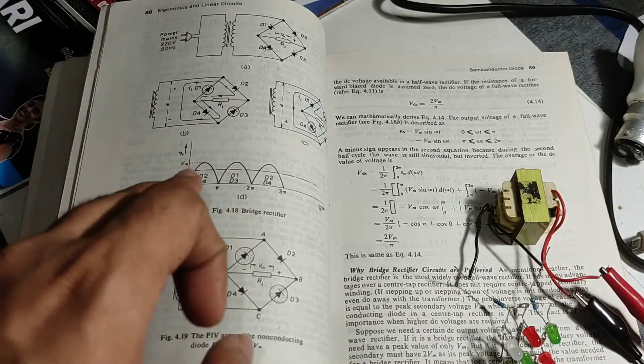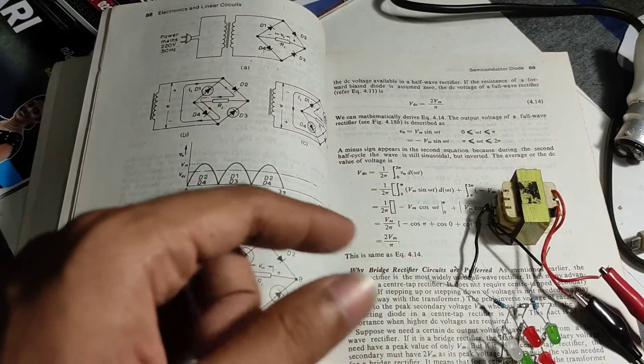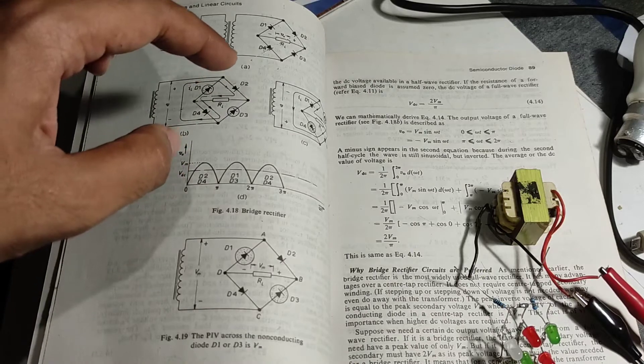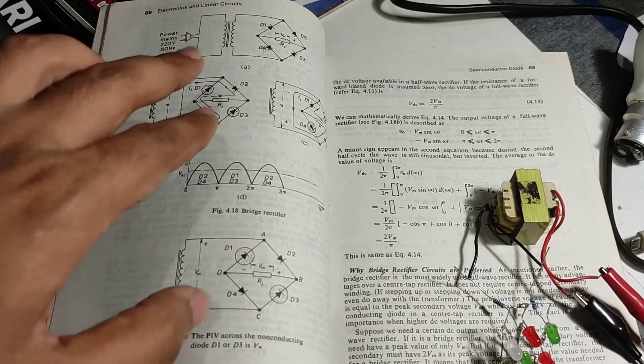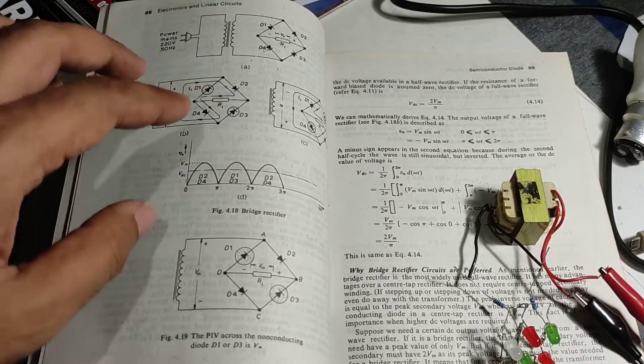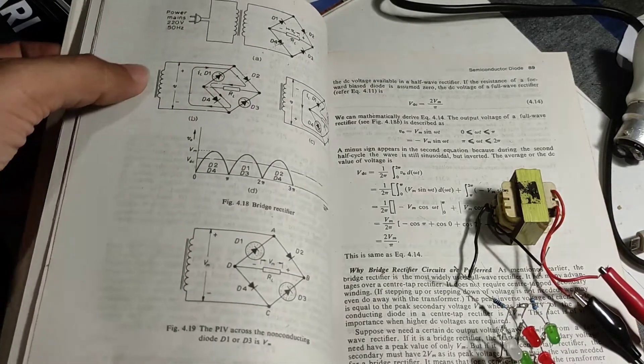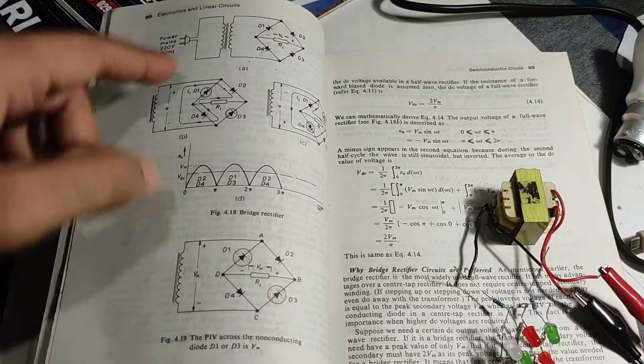It does that by conducting or turning on two diodes at the same time. Out of the four diodes, two will be turned on and two will be turned off at any given time. For example, in this case, assume the positive peak of the AC sine wave is up here.